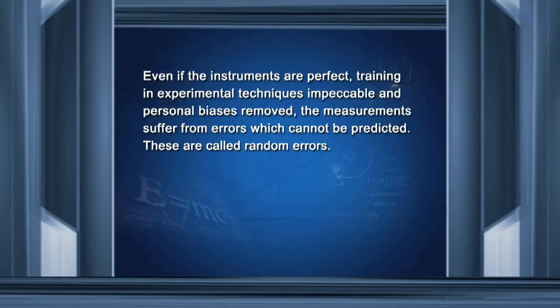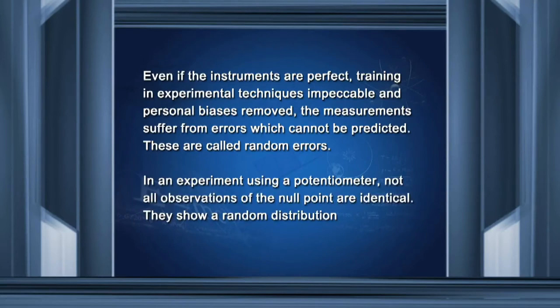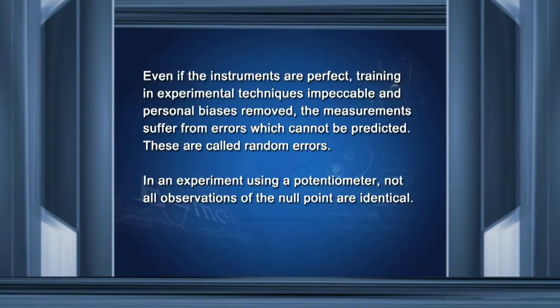Consider a perfect situation: our instruments are perfect, our training in experimental techniques is perfect, and we have no personal biases. The measurements can still suffer from errors — these are random errors and cannot be predicted. In an experiment using a potentiometer, the null point readings are not identical; sometimes the null point is lower, sometimes higher than the previous value, showing a random distribution.